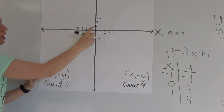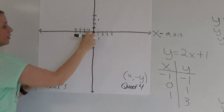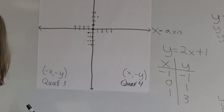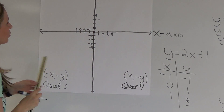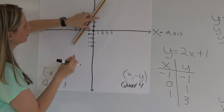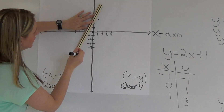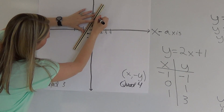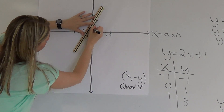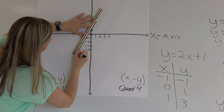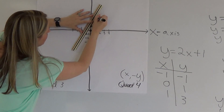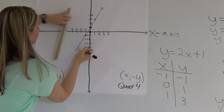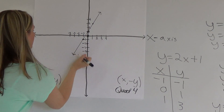Okay, so there you've got your three dots. And you can now just connect the dots with a ruler or straight edge of any kind. And there is your line.